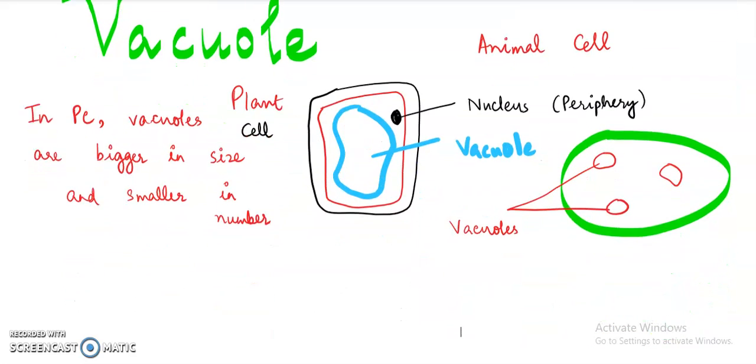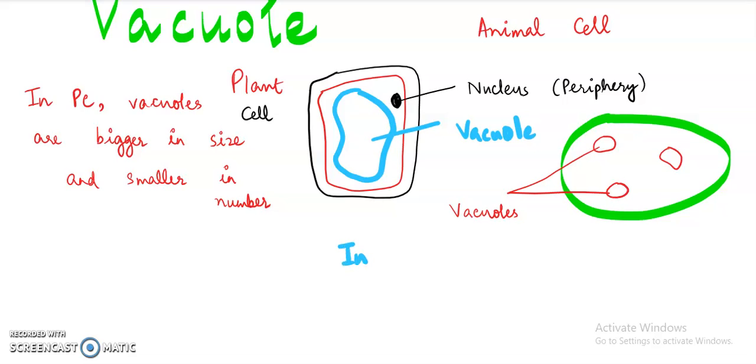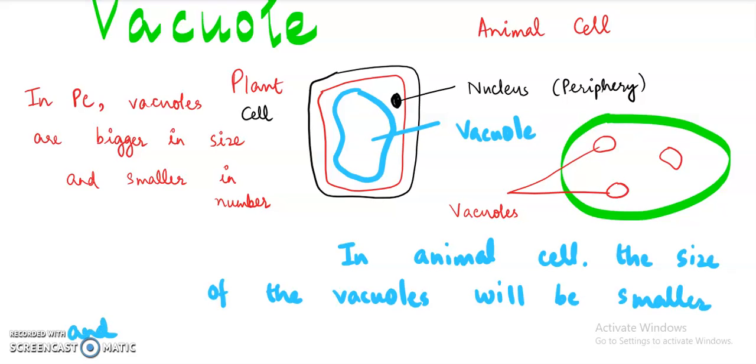So in the case of animal cell we will be writing that in animal cell the size of the vacuoles will be smaller and their number in a cell would be greater. This is very important point that in plant cell the number of vacuoles will be smaller, and in animal cell vacuoles will be smaller in size.